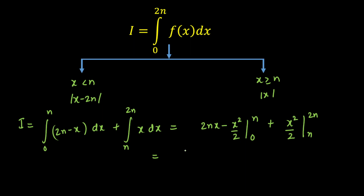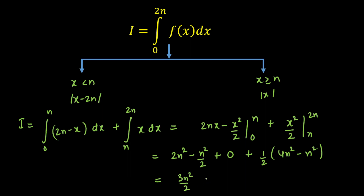Now let's evaluate. Putting n in the first part gives 2n squared minus n squared over 2. Putting 0 gives zero. For the second part, taking one half outside: putting 2n gives 4n squared, and putting n gives n squared. Simplifying: 2n squared minus n squared over 2 is 3n squared over 2, and from the second part I get 3n squared over 2. Adding these two values gives 3n squared, and that will be our final answer.